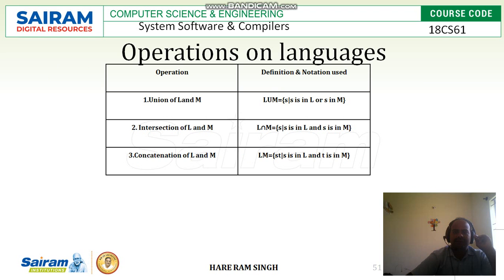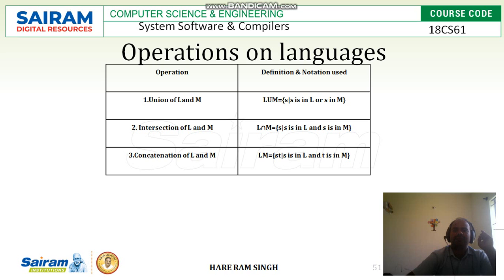Now, what are the different operations on language? Suppose union of L and M: L ∪ M is a set of S such that S is in L or S is in M. Then intersection of L and M: L ∩ M is a set of S such that S is in L and S is in M. Then concatenation of L and M: LM equals {ST} such that S is in L and T is in M. It is very similar to the set operations we studied in discrete mathematics.